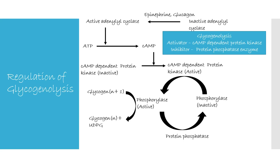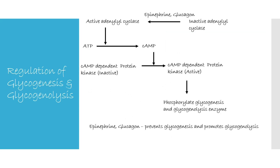Phosphorylation of phosphorylase enzyme, the key glycogenolysis enzyme, makes it active. Removal of the phosphate group by protein phosphatase makes it inactive. So in glycogenolysis, cyclic AMP-dependent protein kinase is the activator and protein phosphatase is the inhibitor. Thus, epinephrine and glucagon promote glycogenolysis and prevent glycogenesis through phosphorylation of the respective enzymes.